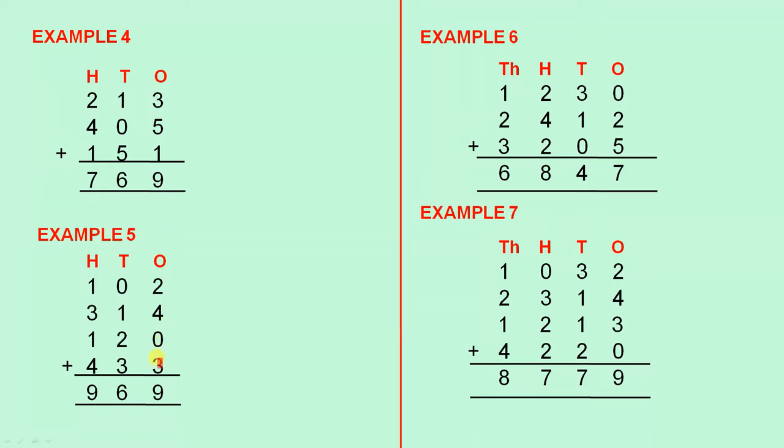Example five. When you add these numbers you get 9, add those numbers you get 6, add those numbers you get 9. So the answer is 969.